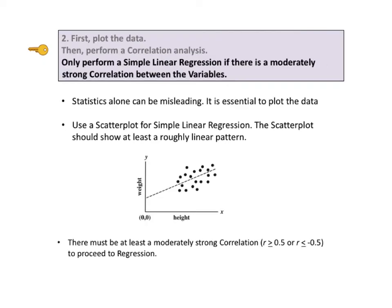If the plot does show a roughly linear correlation, we then go on to calculate the correlation coefficient, denoted by lowercase r. There must be at least a moderately strong positive or negative correlation to proceed to performing regression. That is, r must be greater than or equal to 0.5 or less than or equal to -0.5.